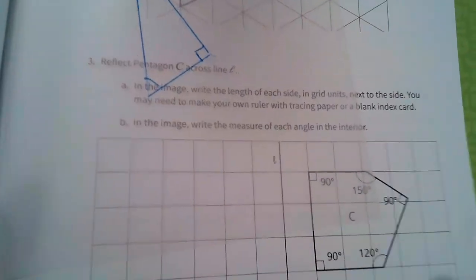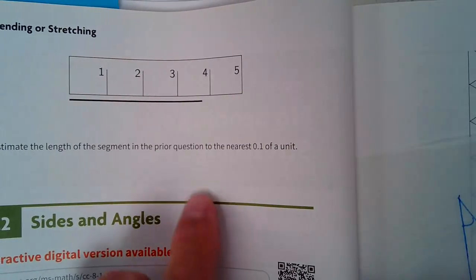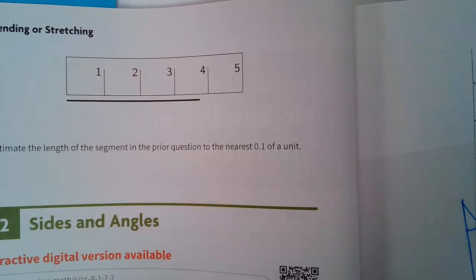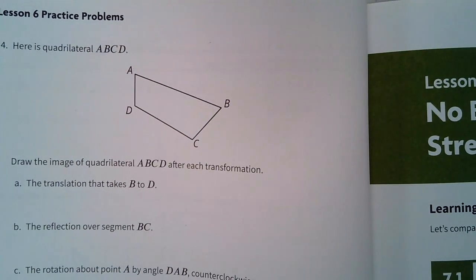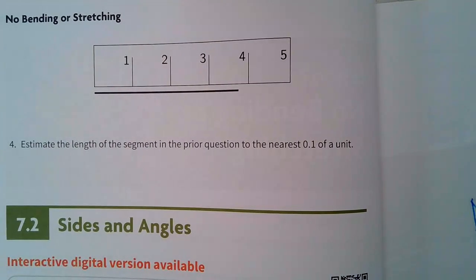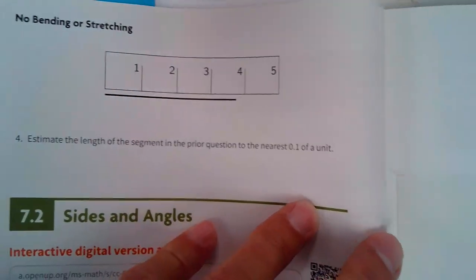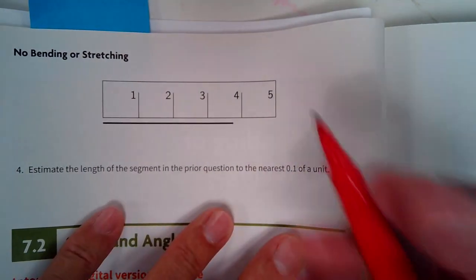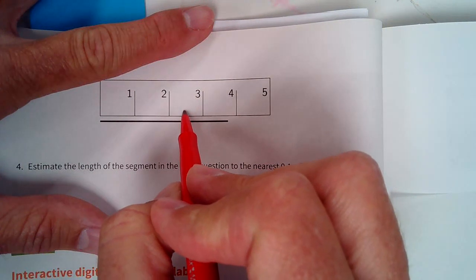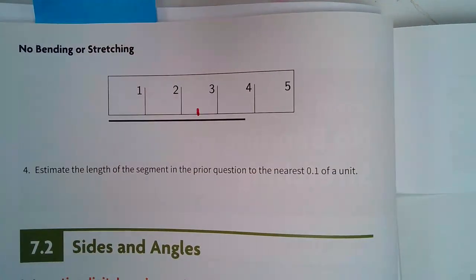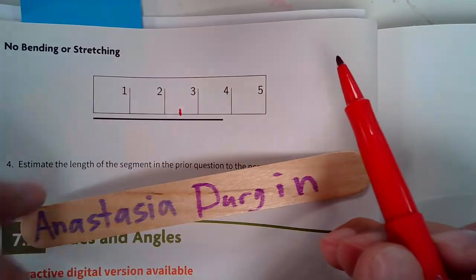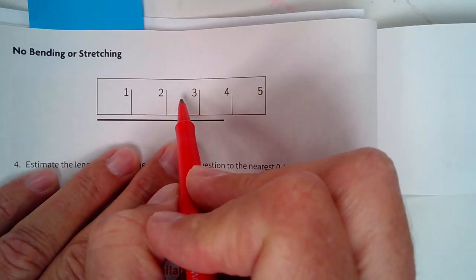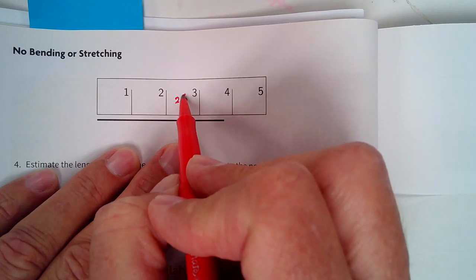So turn the page to 54. It says, estimate the length of the segment in the prior question to the nearest 0.1 of a unit. Wait a second. Well, so now they're not talking about fractions. They're talking about decimals. So halfway between the 2 and the 3, let me pull a stick here for 10 points. If I was to use that in a decimal form, what would that be, Ms. Durgan? That would be 2.5. Nicely done.